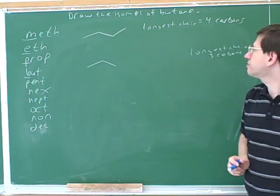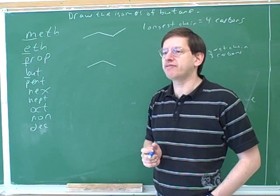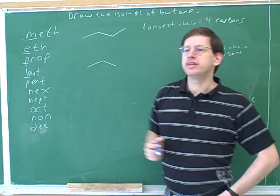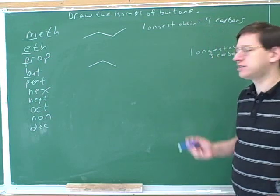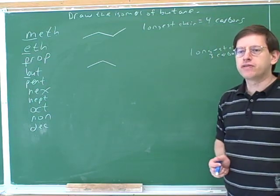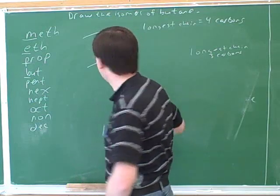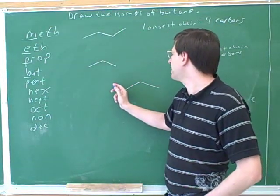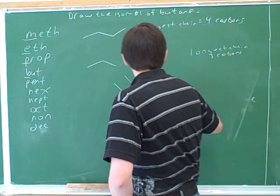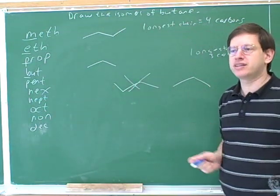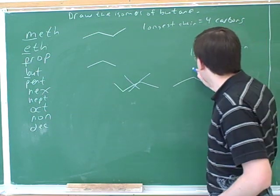This is not an isomer of butane yet because it only has three carbons. To be an isomer of butane, I have to put in a fourth carbon — but I have to do it in a way that the longest chain still has three carbons. For example, I can't put the fourth carbon on the end, because then the longest chain has four carbons. But there is another place: I could put the fourth carbon here in the middle.